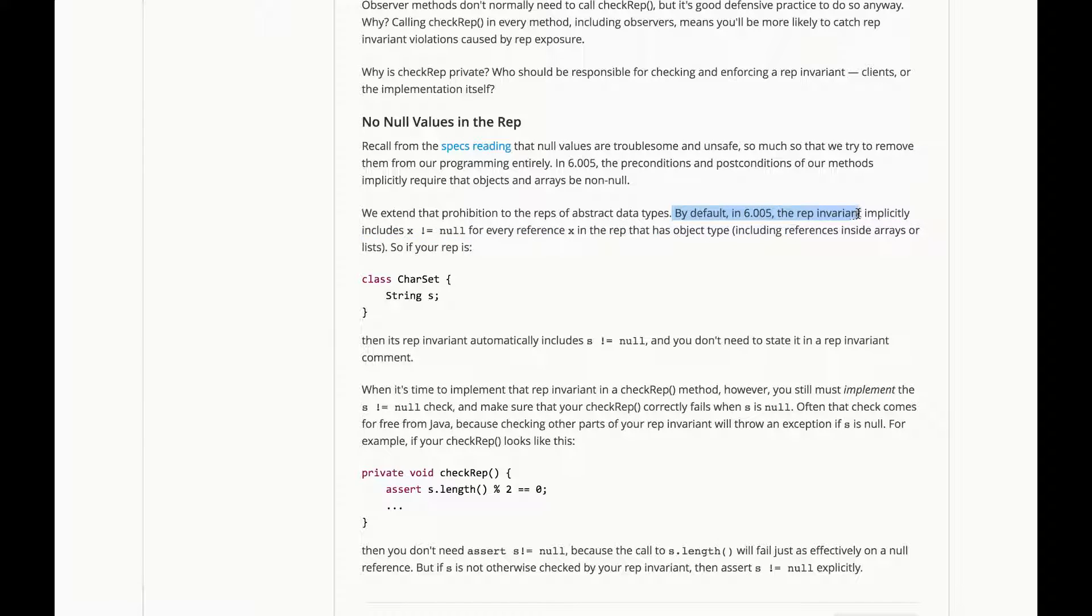By default, in 6005, the rep invariant implicitly includes x is not equal to null for every reference, object reference or array reference x in the rep. So if your rep is string s, then its rep invariant automatically includes s is not equal to null. You don't need to state it in a rep invariant comment.